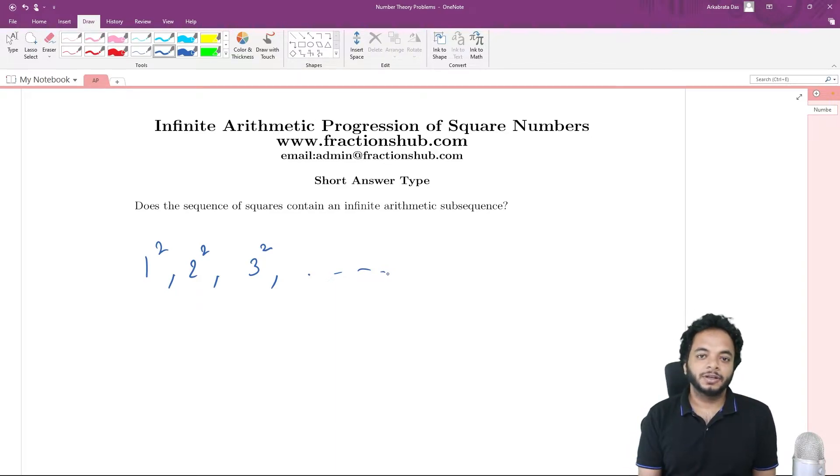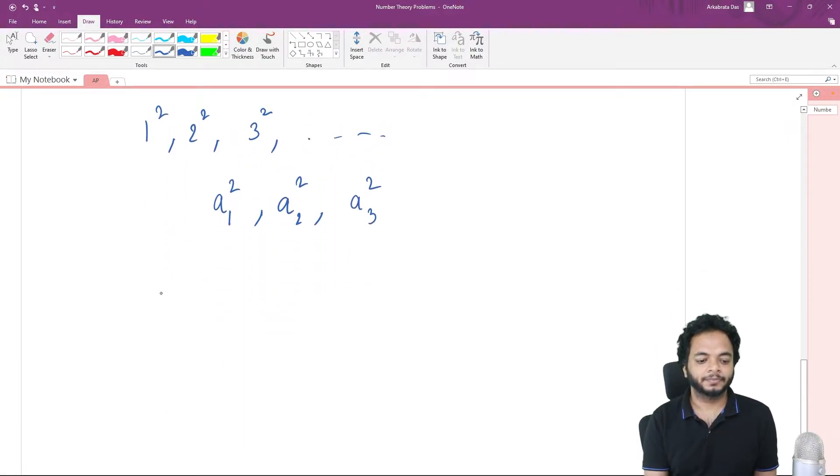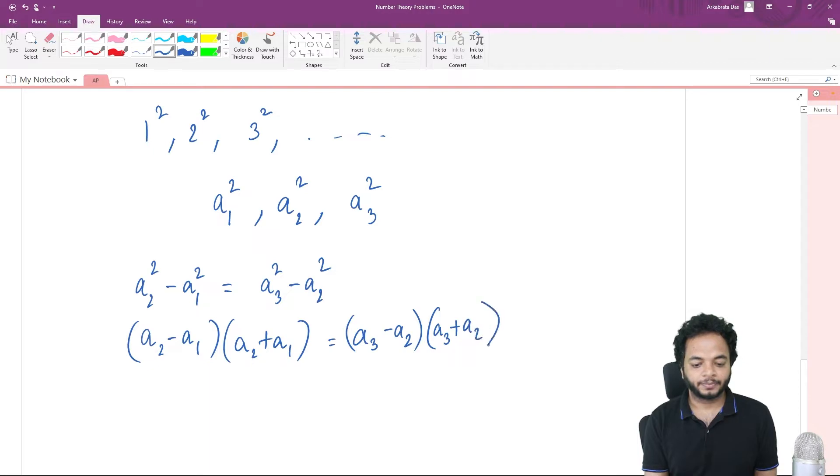First, let's analyze if we have three such elements: a1 squared, a2 squared, and a3 squared. Suppose they're in arithmetic progression. Then what happens? The basic fact about arithmetic progression is that a2 squared minus a1 squared will be equal to a3 squared minus a2 squared. So we have (a2 minus a1)(a2 plus a1) equals (a3 minus a2)(a3 plus a2).